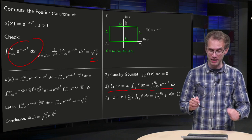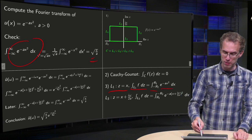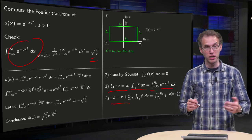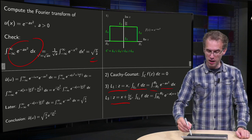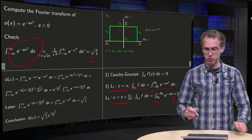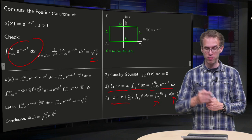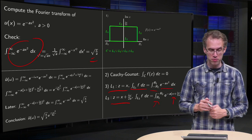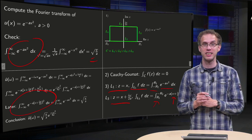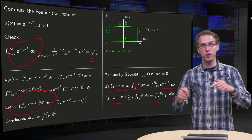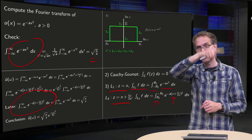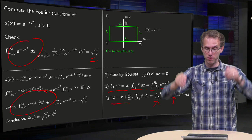Now along L3, there we parametrize z = x + iω/2a. So dz is just dx, and we get a somewhat messy exponent, with boundaries from R1 to minus R2 — going backwards. But this messy exponent is exactly the exponent we want to have, so that's nice. We know what's going on here and over there; the total integral equals zero, now we only want to get rid of the contributions from L2 and L4.